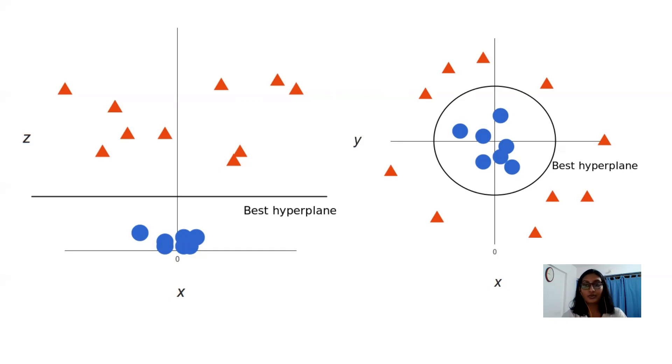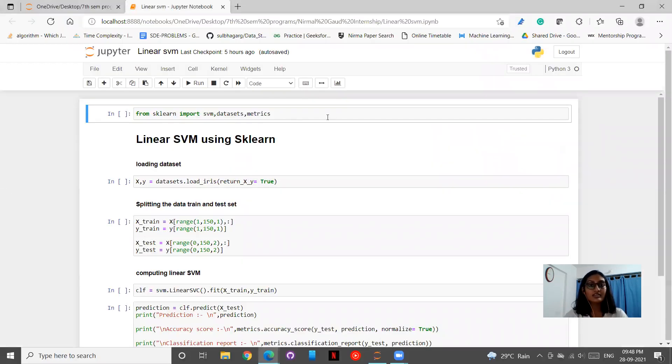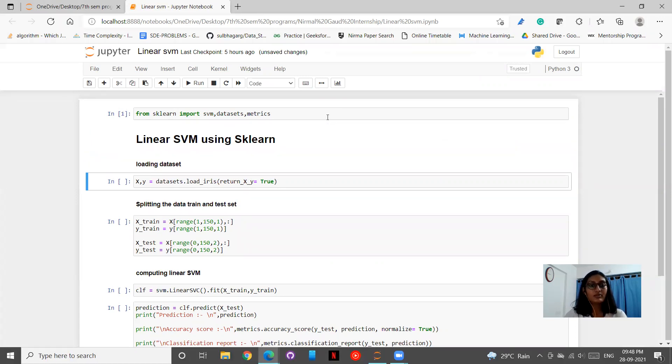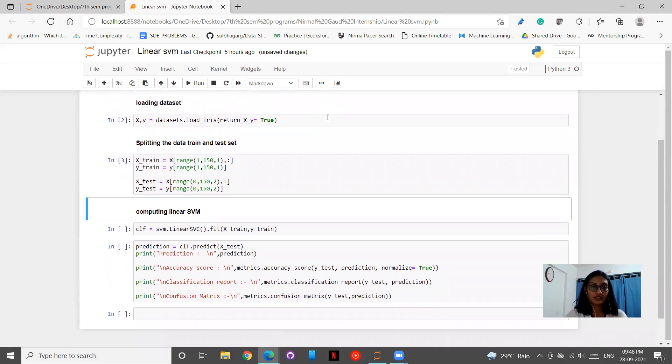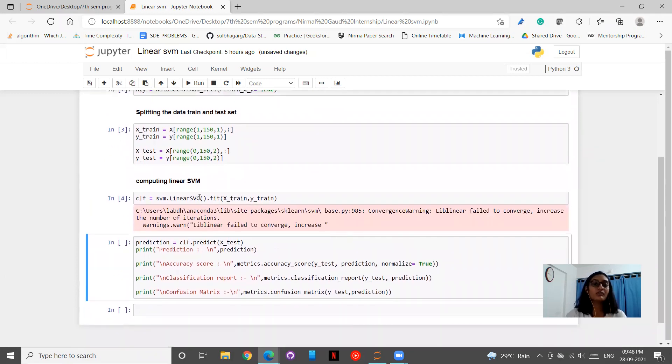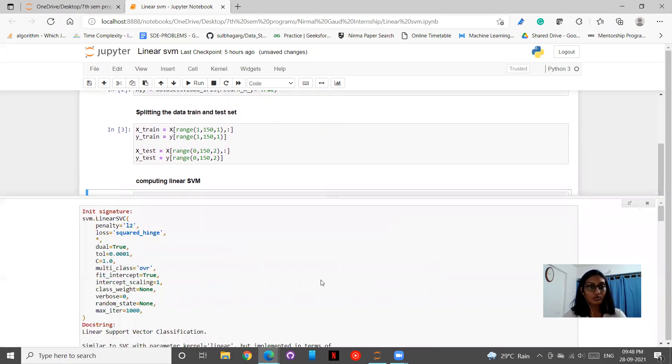Now let us move forward to the code and understand all that we have studied till now. So we are importing our sklearn library and thereafter we are importing SVM datasets and metrics and we'll be performing linear SVM. We'll be loading our dataset, the Iris dataset, and we'll be splitting our dataset. Thereafter we'll be calling our SVM and from that we'll be calling a linear SVC and this is how its documentation will look like.